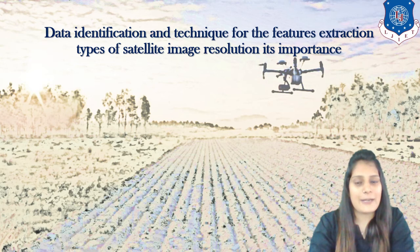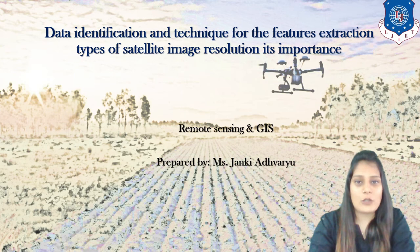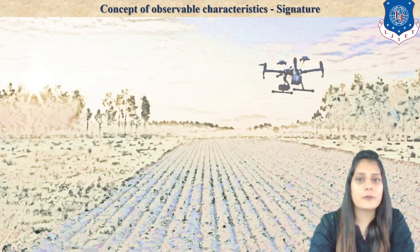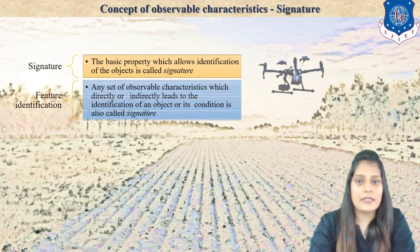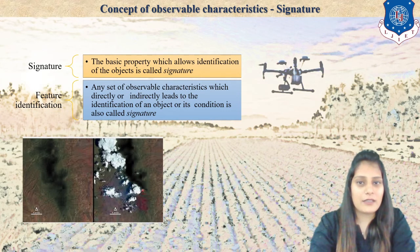Let us discuss the importance of data extraction. If data is not clear or not properly visible then it is of no use to extract it. The very first thing we are going to discuss today is the concept of observable characteristics. Here I am going to show you a figure — you can see it has different colors: green color may appear as blackish, and brown color can also be seen.